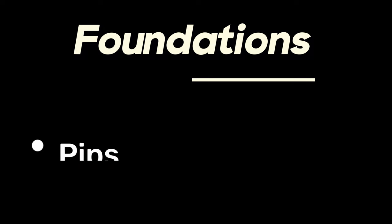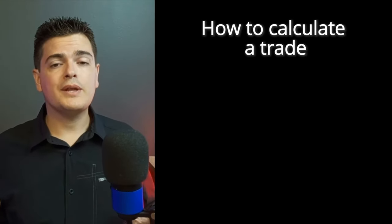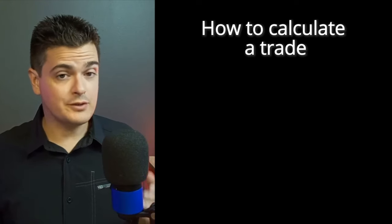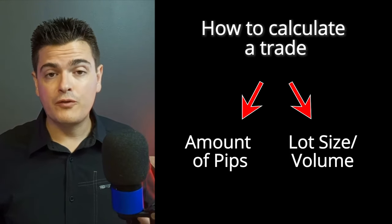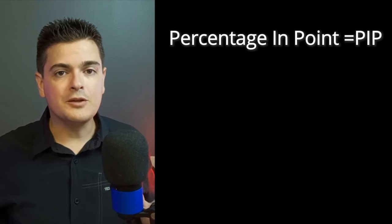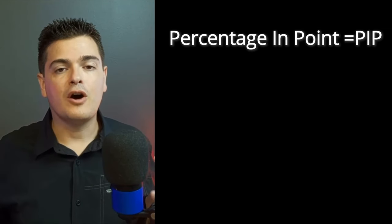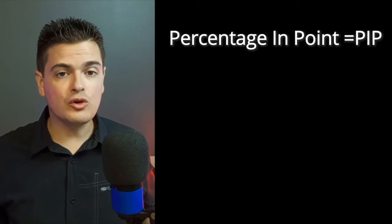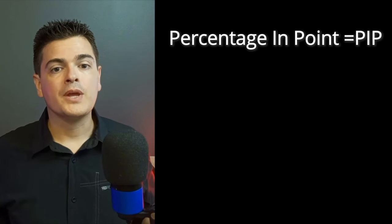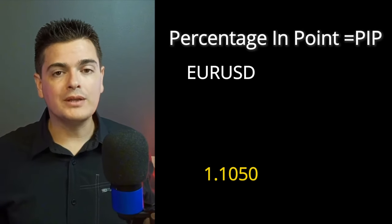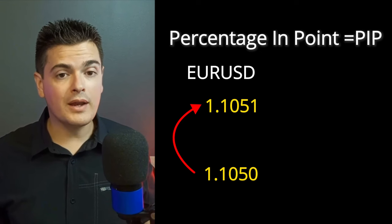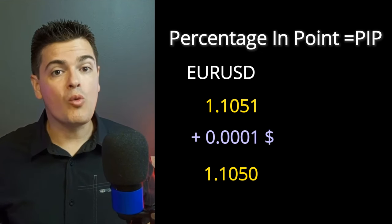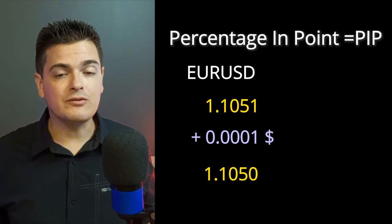Understanding the basics — here we will look at pips and lot size. The two elements necessary to calculate the amount at risk in a trade are the pips and the volume. What is a pip? A pip, a percentage in point, is the unit of measurement to express the change in value between two currencies. For example, if the EURUSD moves from 1.1050 to 1.1051, that is a 0.0001 USD rise in value.